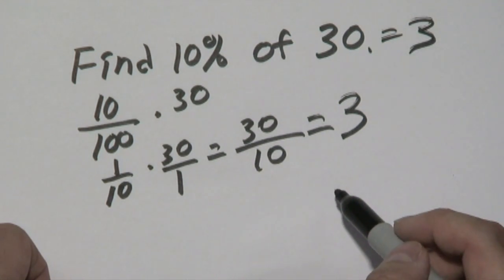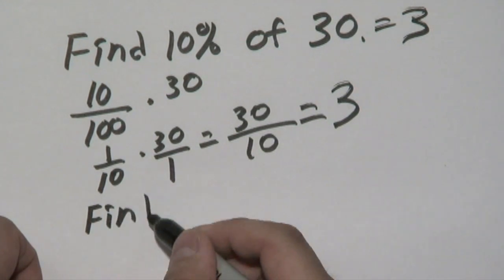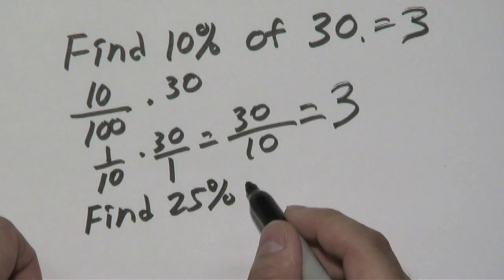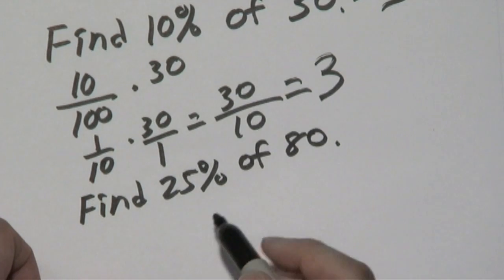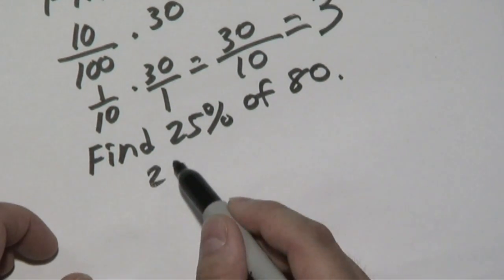Sounds simple? Well, let's do another example. Suppose you want to find 25% of 80. Now do the exact same thing like we did above. Take the 25%, convert it.